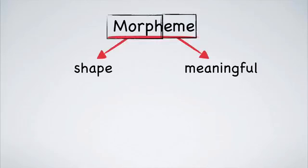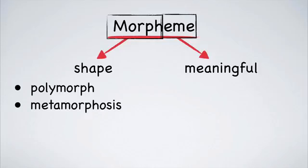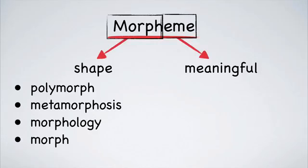For example, morph is used in the words polymorph, an organism that can take many forms; metamorphosis, the process of changing form or shape; morphology, the study of morphemes; morph, a verb that means to change shape; morphogenesis, the origin and development of biological forms, etc. The list goes on.